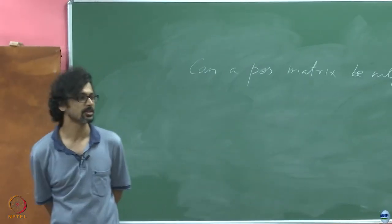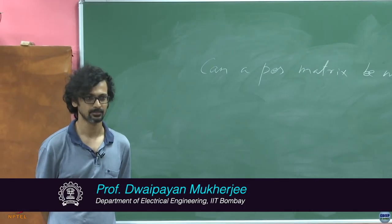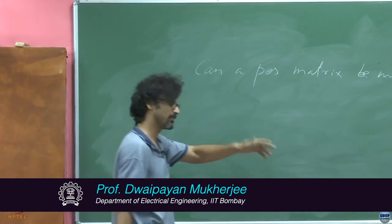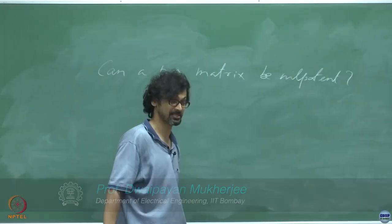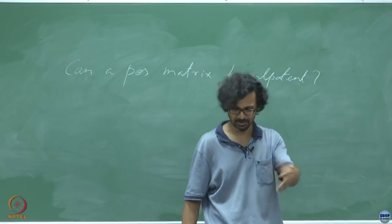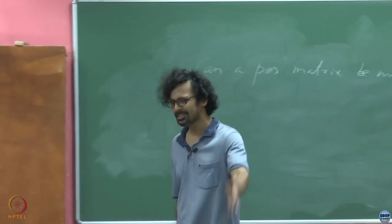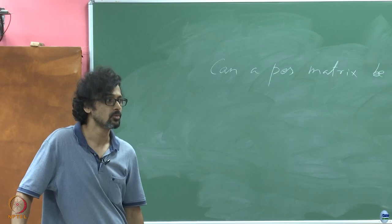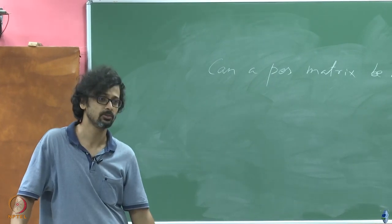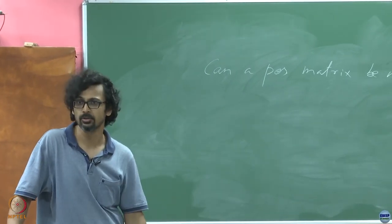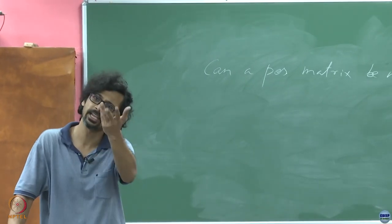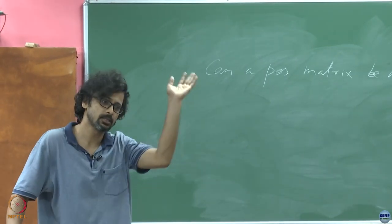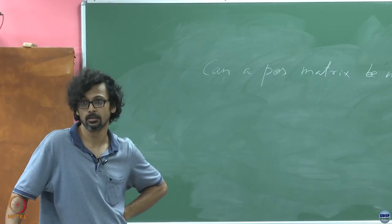Think in terms of what we have done until the previous lecture, until Jordan canonical form. What is the trace of a matrix equal to? What do we know the trace of a matrix to be equal to? Sum of the eigenvalues. What do we know about the eigenvalues of a nilpotent matrix? They're all zeros. So what must the trace of a nilpotent matrix be? Zero.